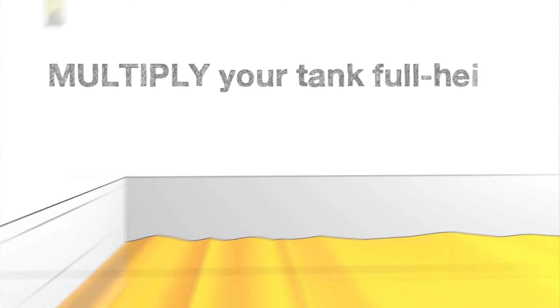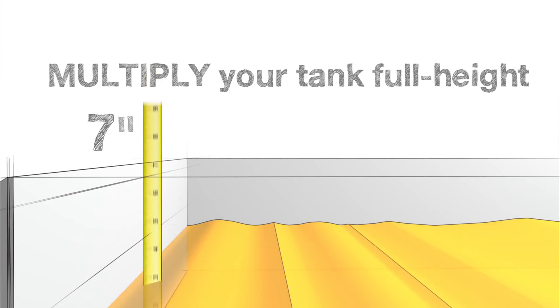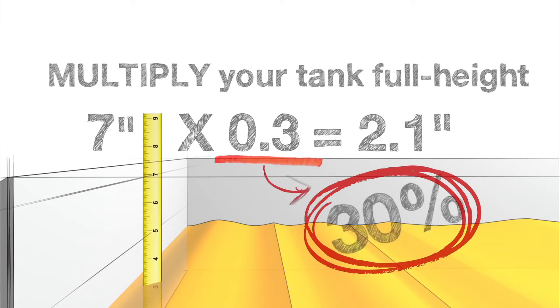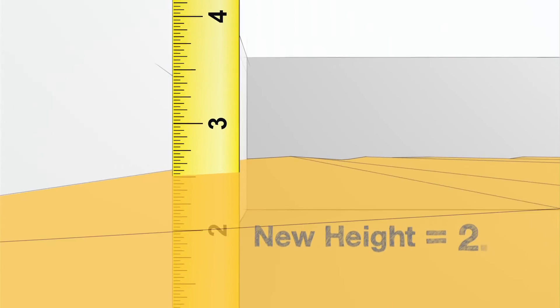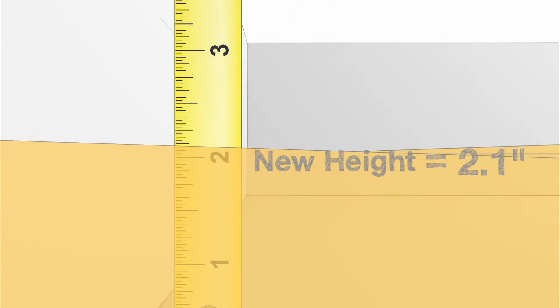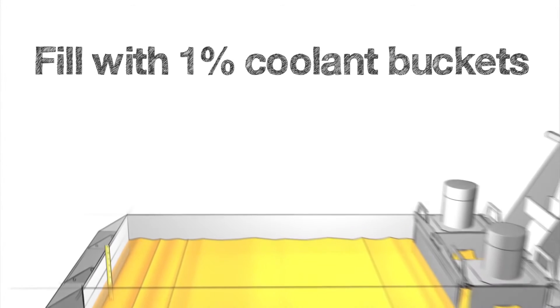Simple. Just multiply your tank full height by 0.3. This calculation gives you the exact measurement in inches to reduce your coolant level down to 30% full. Remove coolant until you get down to this measurement, and fill with 1% coolant buckets.